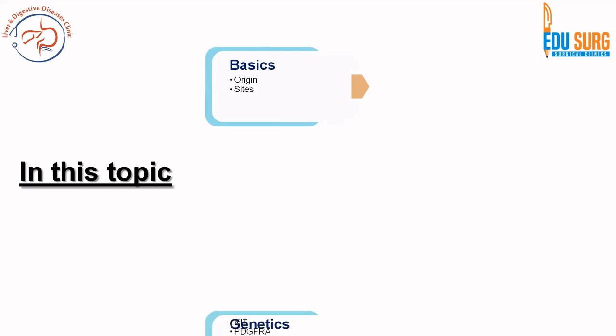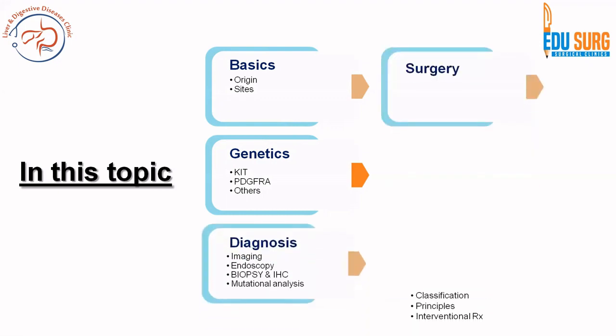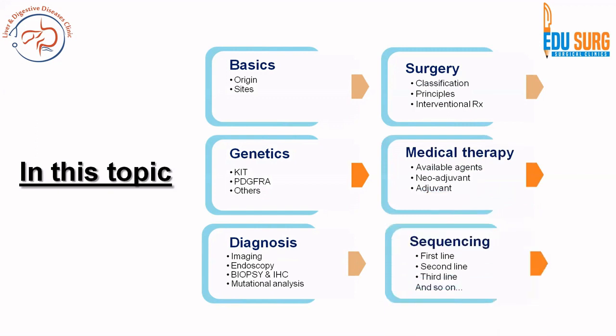We have divided this series into three parts. The first part will discuss the origin of the tumours, common sites, and basic topics about gastrointestinal stromal tumour or GIST, and then we will cover the most important part — the genetics, mutational analysis, and concepts behind different treatments. In the next part we will look at diagnosis and surgery, and in the final part we will cover medical management and sequencing of therapies.